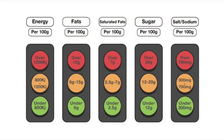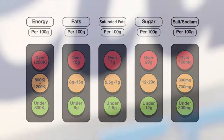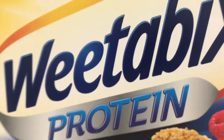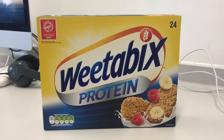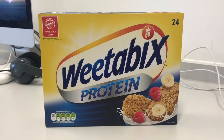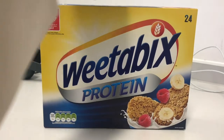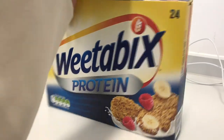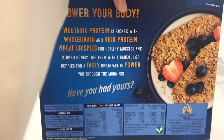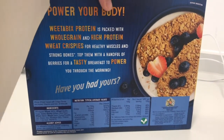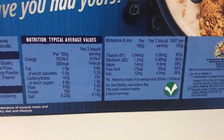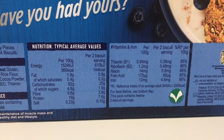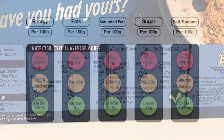So how do these traffic lights help you create a healthy meal? On all the packaged foods that you buy there is a nutrition information panel. Here you will find a list of the amount of energy, fat, saturated fat, sugar and salt in 100g of Weetabix.